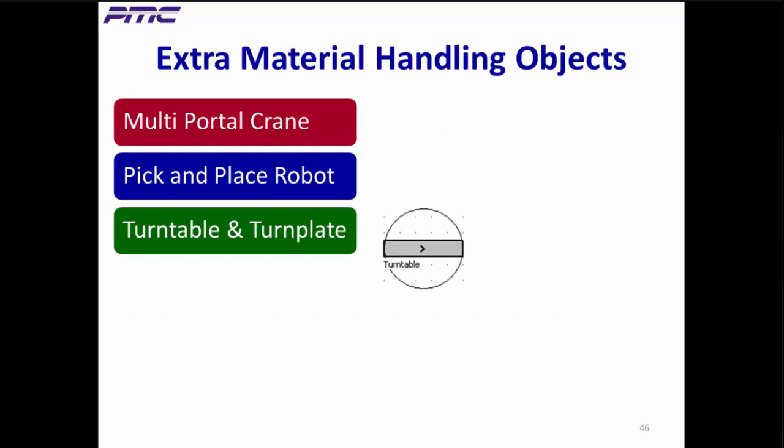The turntable directly models the action of a turntable, including time to move a part on and off, rotation time, and rotation angle. The turn plate is another unique object similar to the turntable, but more complex since it also ensures that the part is oriented as specified when the turn plate rotates to its destination.